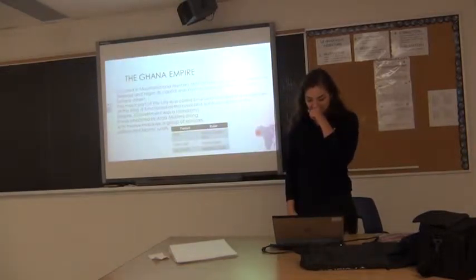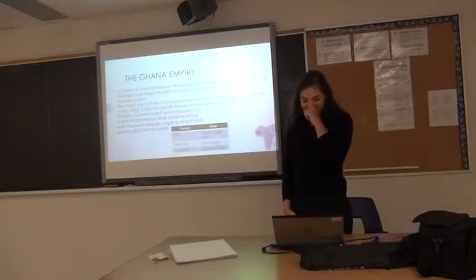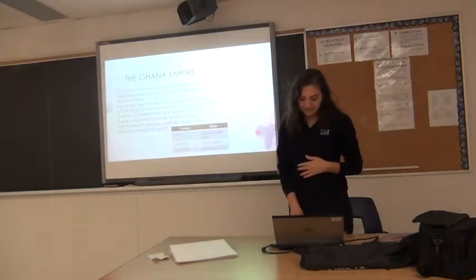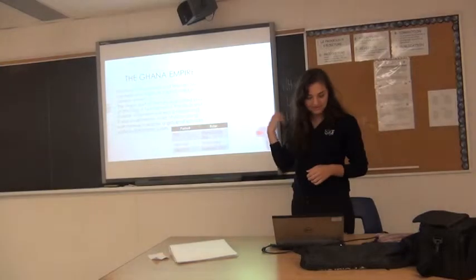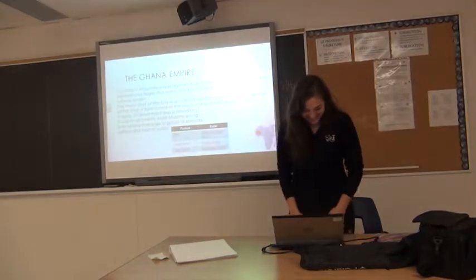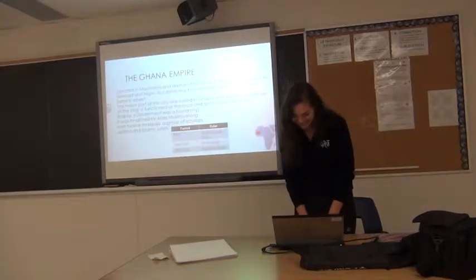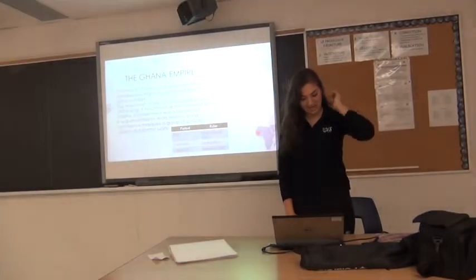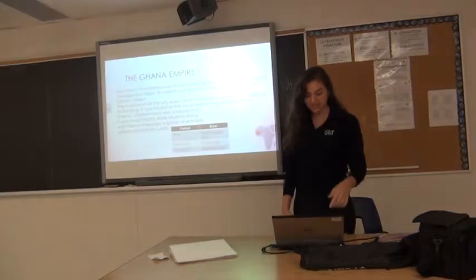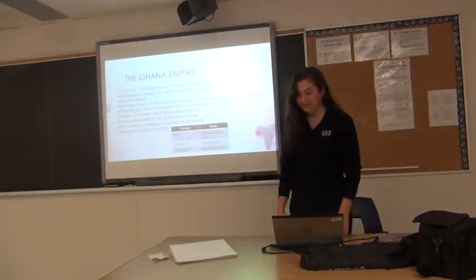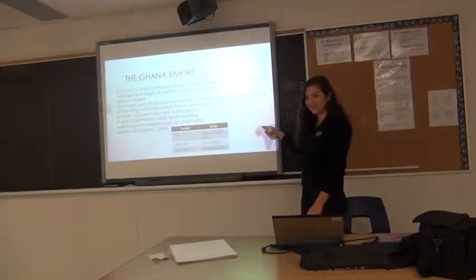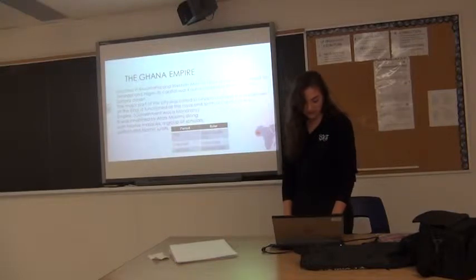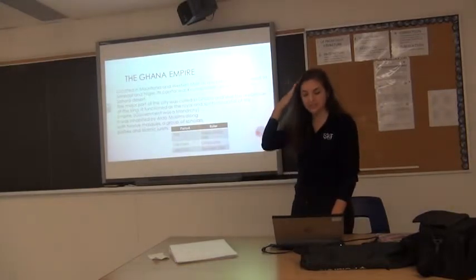Starting with the Ghana Empire — it was located in Mauritania and Western Mali. Its area of influence spread to Senegal and Nigeria. Its capital was Kumbi Saleh, on the rim of the Sahara Desert. The major part of the city was called Al-Aghaba, and it was the residence of the king, functioning as the royal and spiritual capital of the empire. It was inhabited by Arab Muslims, along with 12 mosques, a group of scholars, scribes, and Islamic churches.